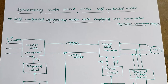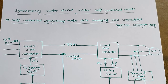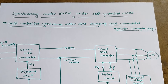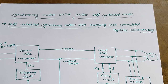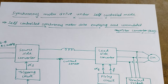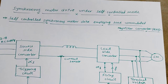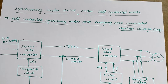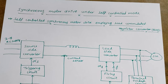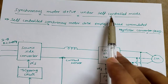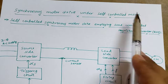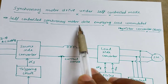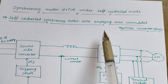Hi everyone. In the earlier session we have seen one of the variable speed synchronous motor drives — the true synchronous mode — which was operated in open loop mode. In today's session we will see the self-controlled synchronous motor drive, which will operate in the closed loop mode.